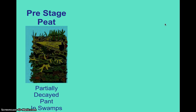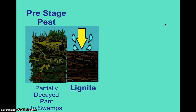Peat is basically partially decayed plant in swamps. So this plant material is starting to decay. But if it doesn't fully decay, it's going to go into the first stage, which is called lignite.